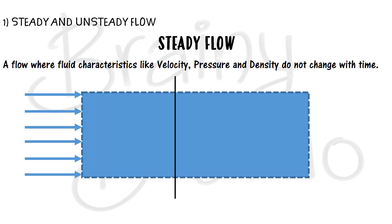I'll define a section within this control volume. At a particular time — say when the fluid flow started at five seconds — the velocity is 10 meters per second and the density is 1000 kg per meter cube. Now if I change the time to 10 seconds, at this same section the velocity is still 10 m/s and density is still 1000 kg/m³ — none of these characteristics have changed.